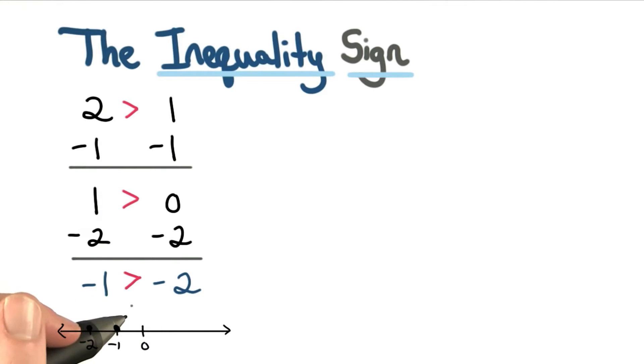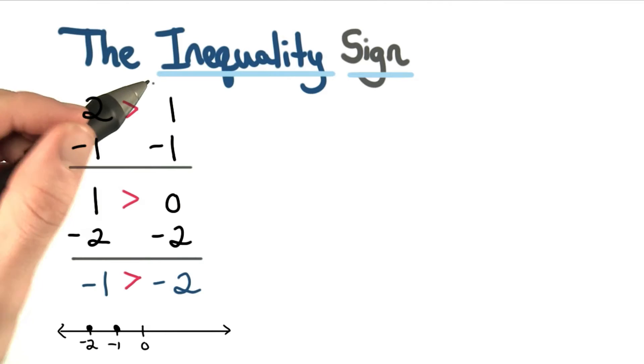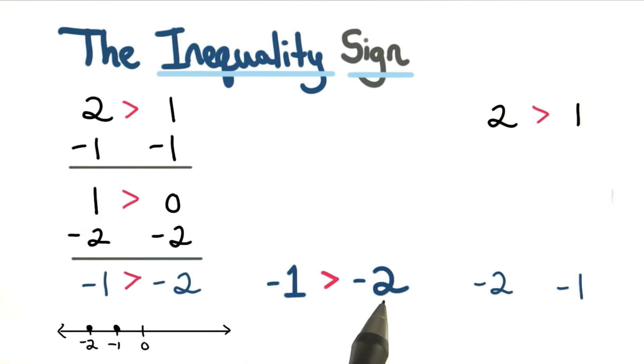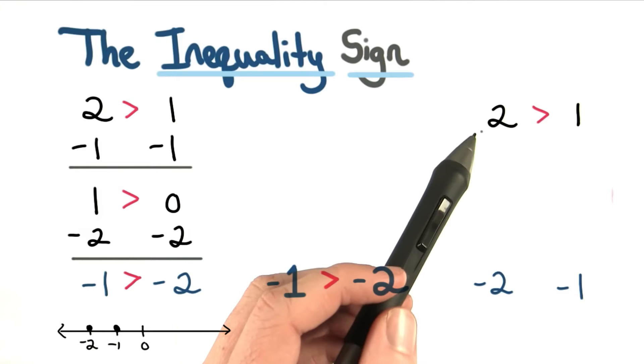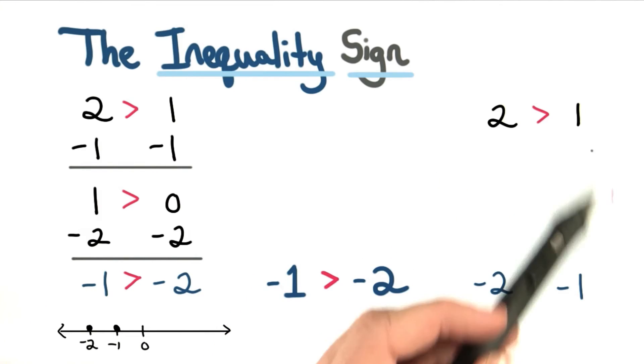But we're not after comparing numbers here. We want to know about the inequality sign. I've rewritten negative 1 is greater than negative 2, and instead of doing the subtraction twice, what if we just would have multiplied?